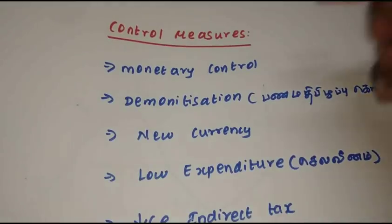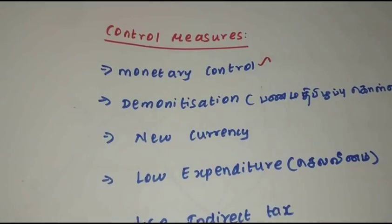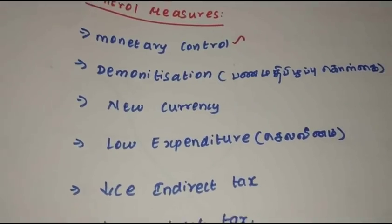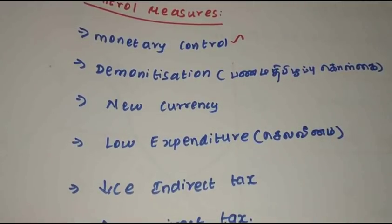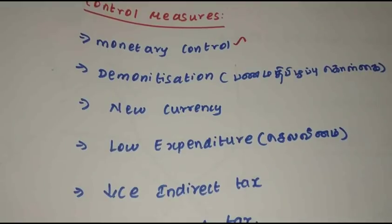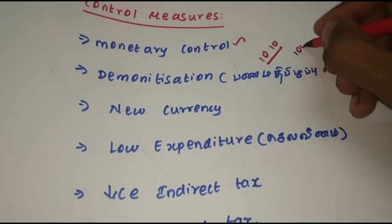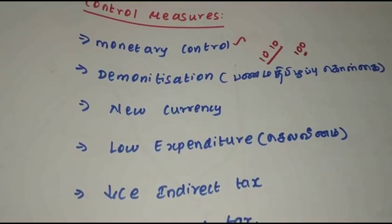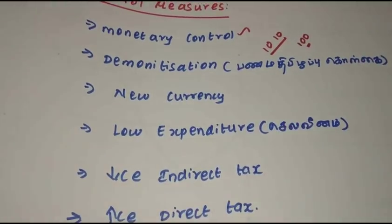What do you do to control inflation? Monitoring is key — monitoring, monitoring, monitoring. Demonetization is one method. Introducing new currency is another. Decrease indirect tax. Increase direct tax. Consistently, increasing tax is a measure. The tax policy is used to control purchasing power and demand.